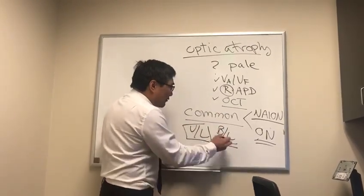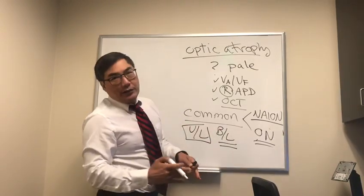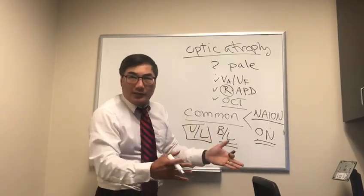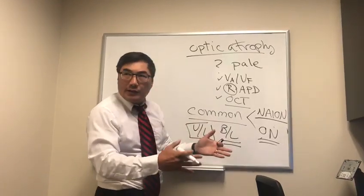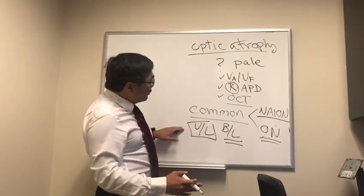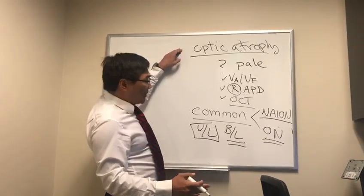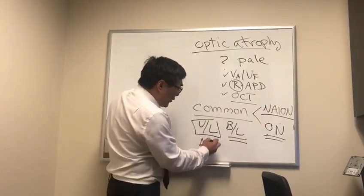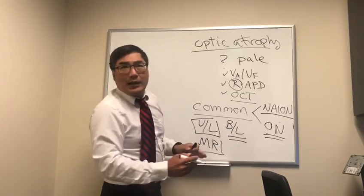If it's just unilateral, we aren't going to be doing the vitamin testing, we're not going to be thinking about systemic toxins, we're not going to be thinking about Leber hereditary optic neuropathy as much, because those are all bilateral. If it's strictly unilateral, it's a real optic atrophy, we've excluded the common things, then the highest yield test is doing an MRI.